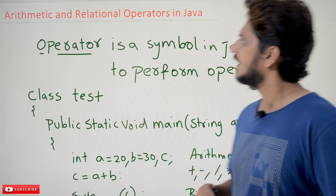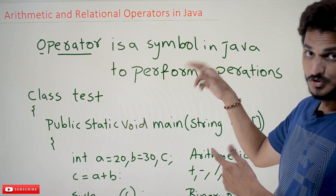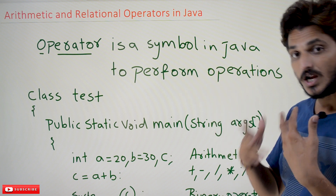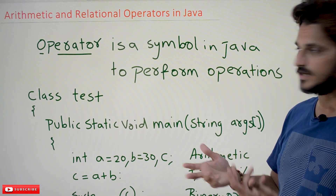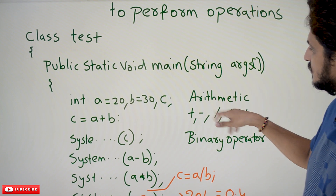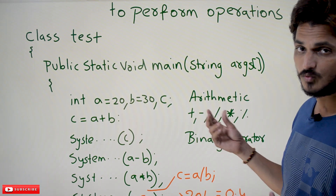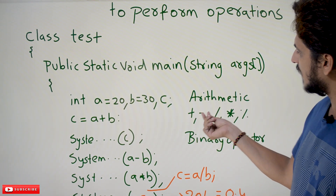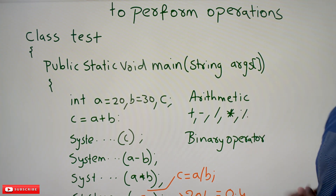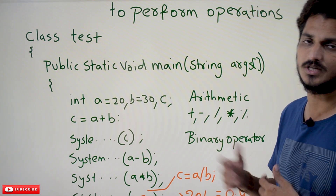Coming to today's class, an operator is a symbol in Java used to perform some operations. Arithmetic operators are used to perform arithmetic operations. The symbols we are going to use are plus, minus, division, multiplication, and modulus. These are the 5 arithmetic operators we are going to use in Java.